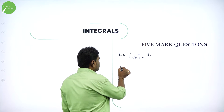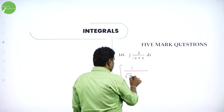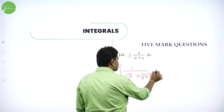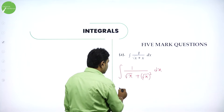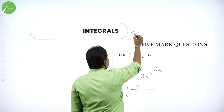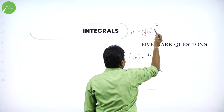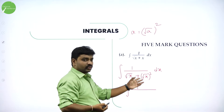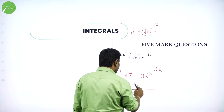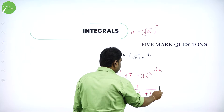Here, can I write it as integral of 1 by root x plus x? In spite of x, can I write root x the whole square dx? Now, I can take root x common. In maths, a can be written as root a the whole square. Similarly, in spite of x, I can write it as root x the whole square. In these two terms, I will take root x common, and I will be left out with 1 plus root x dx.